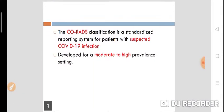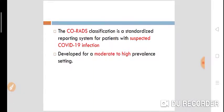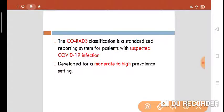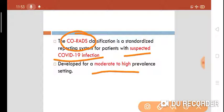CO-RADS classification is a standardized reporting system for patients with suspected COVID-19 infection. CT chest plays a very important role in suspected COVID-19 infection, and the system is developed for moderate to high prevalence settings.